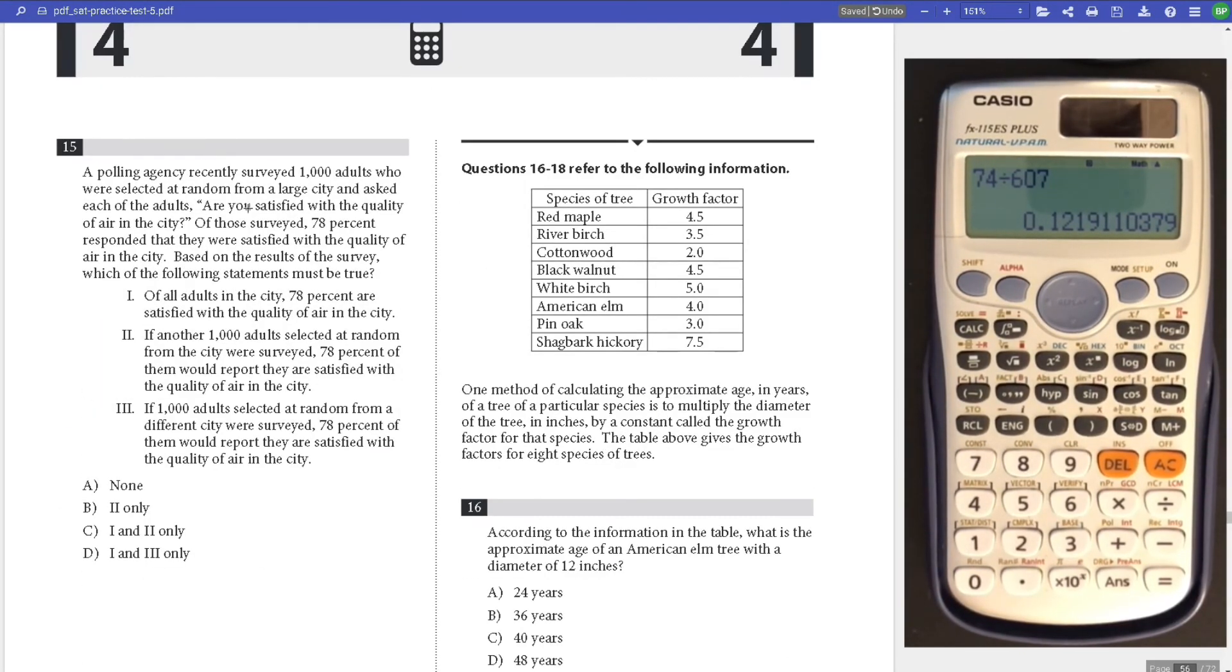Number 15, we're given this survey. A thousand adults was selected at random from a large city. 78% said yes. It must be true, so it has to be certain. If all adults in the city, 78% are satisfied with the air, that wouldn't be the same. It's a large city, there's millions of people. A thousand is not going to be enough to have an accurate sample. Same logic for the next one. This one would be wrong because that's a different city. I guess there's none of them.